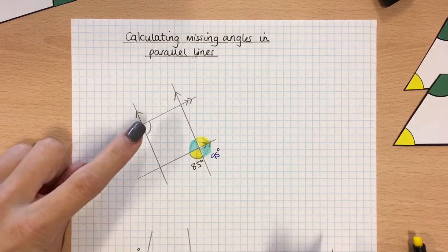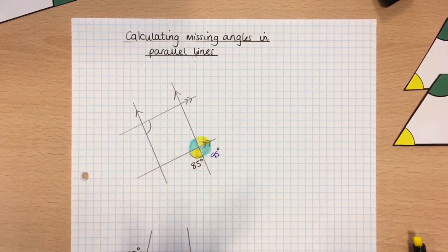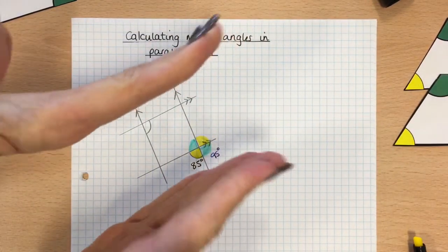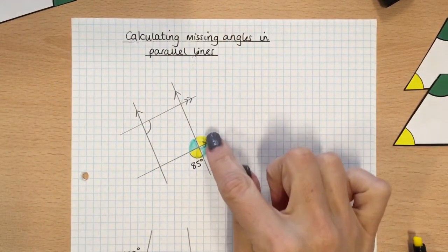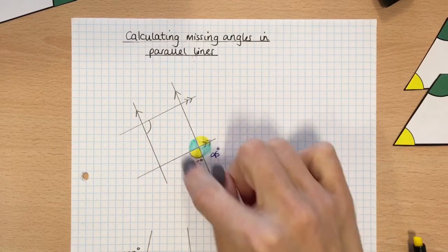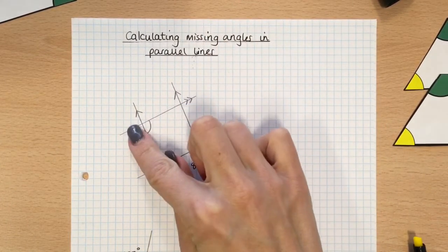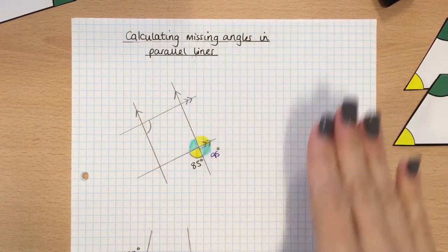So how are we going to work out this angle over here? Well, because these lines are parallel, and because these lines are parallel, this means how the colours are labelled on this one will be identical to the ones here.